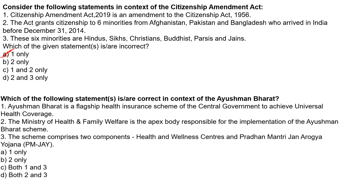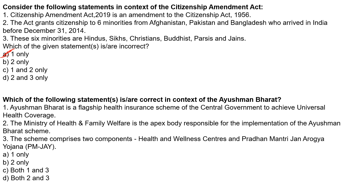The next question from the current affairs section: Which of the following statements is or are correct in context to Ayushman Bharat? Statement one: Ayushman Bharat is a flagship health insurance scheme of the central government to achieve universal health coverage. Statement two: The Ministry of Health and Family Welfare is the apex body responsible for the implementation of the Ayushman Bharat scheme. Statement three: The scheme comprises two components — Health and Wellness Centers, and Pradhan Mantri Jan Arogya Yojana (PMJAY). Options: A: First only; B: Second only; C: Both First and Third; D: Both Second and Third.